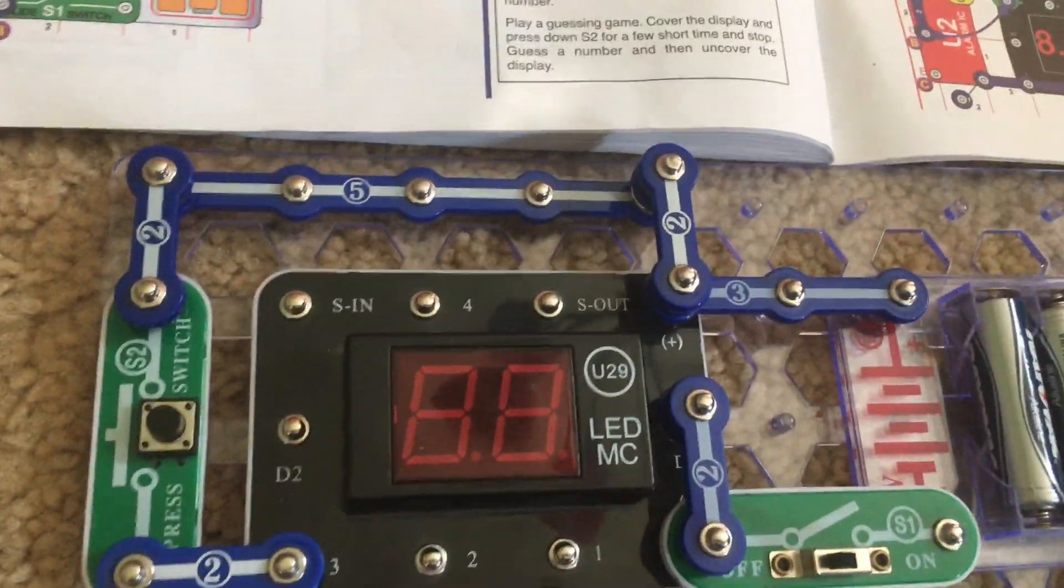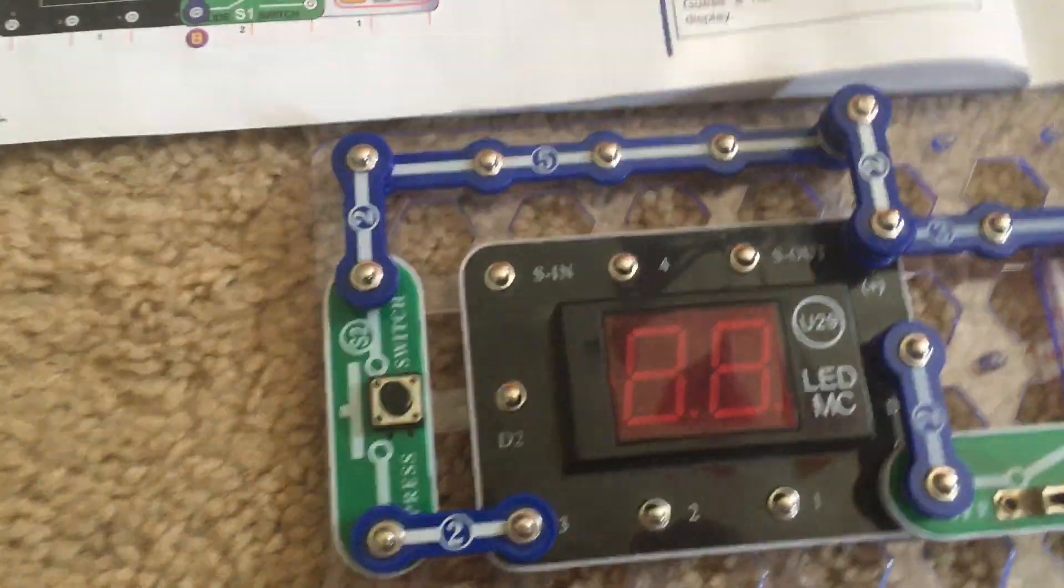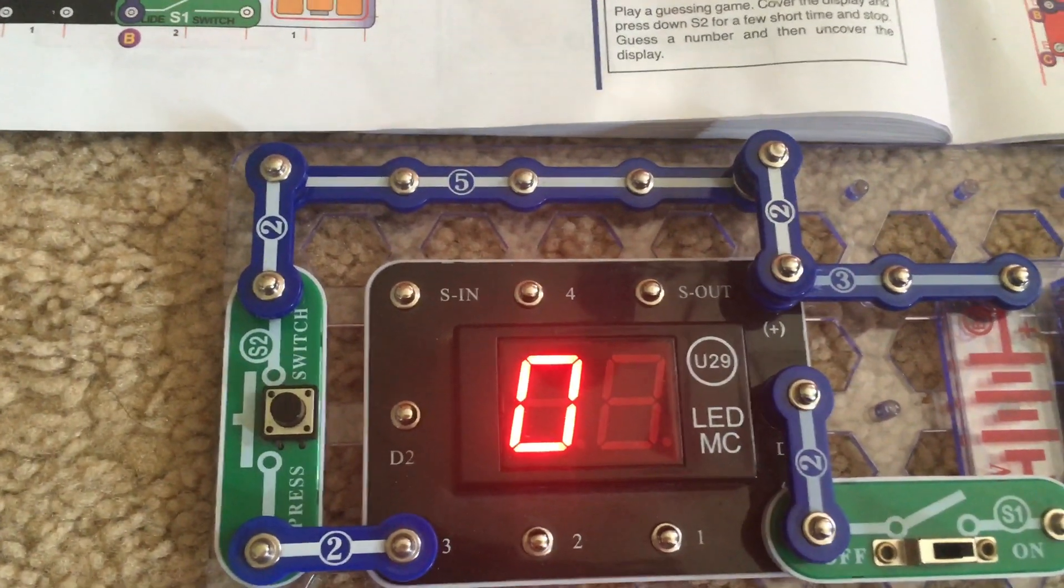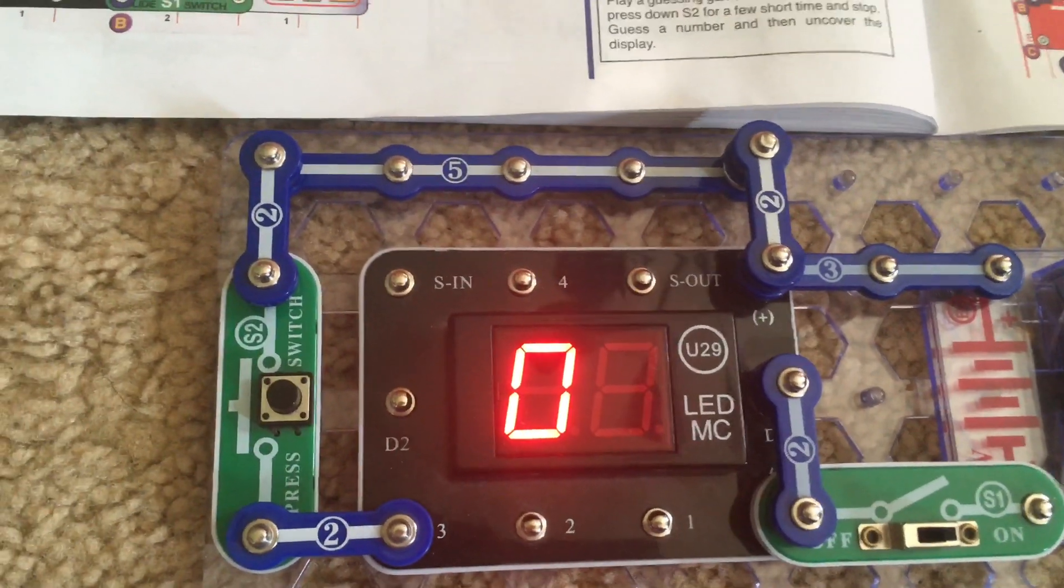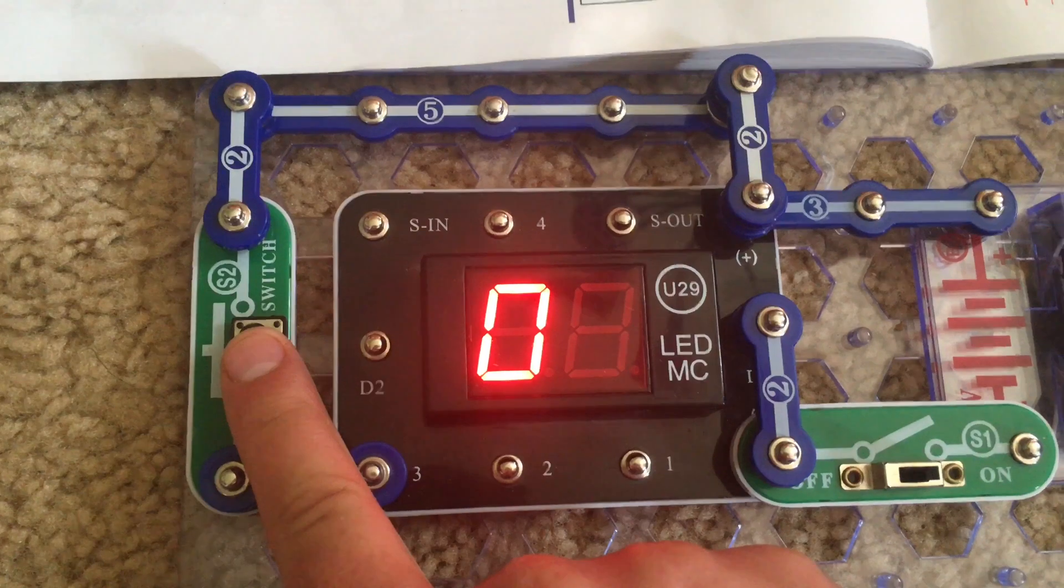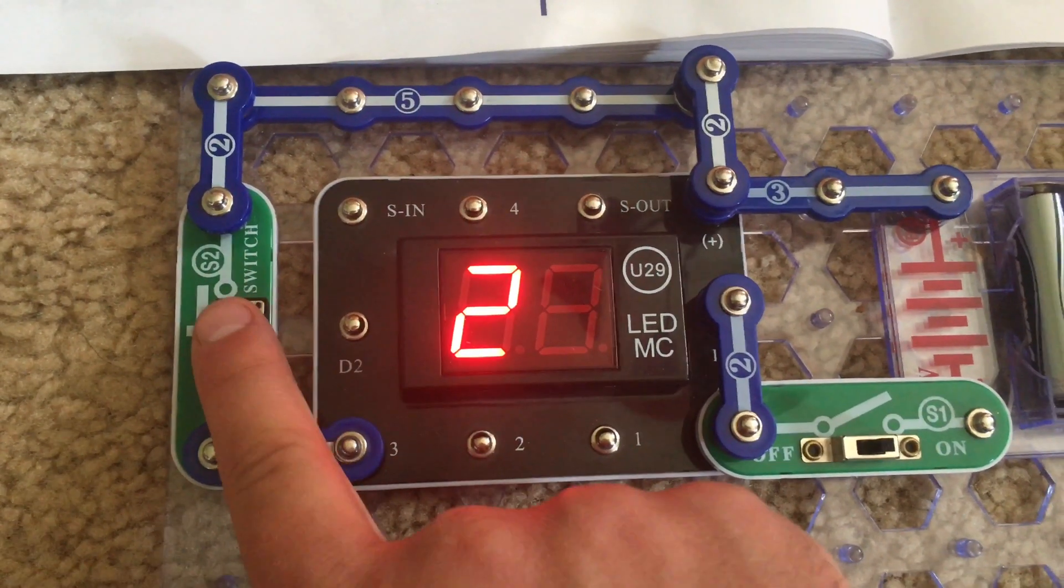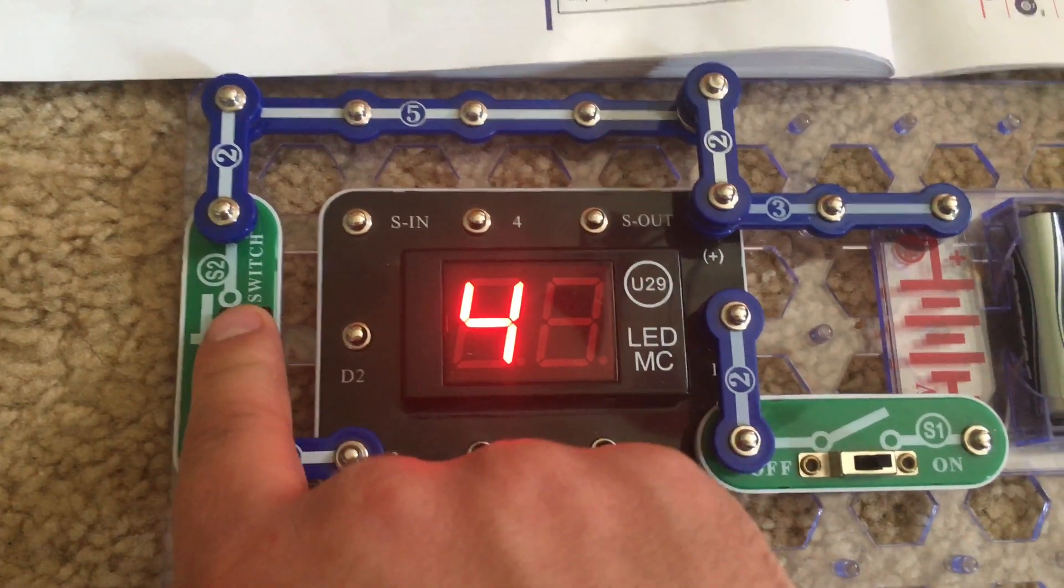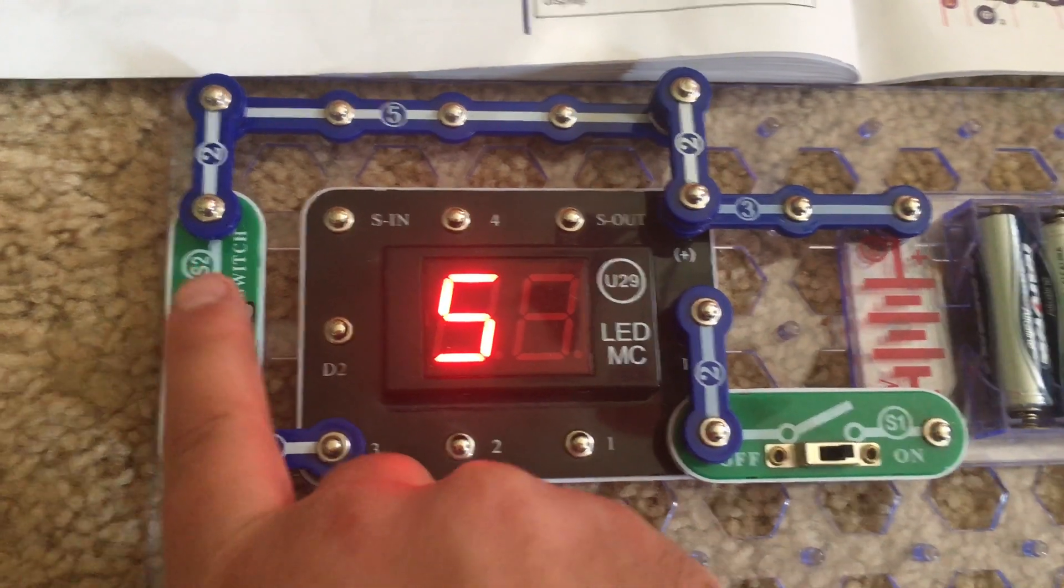Project 194 is add one. For this project we are going to turn on the slide switch and the tens digit of the U29 display will show zero. Now we have to hit the press switch and now the number turns to one. Press it again, it turns to two. So basically we are increasing the number by one for each time that we hit the press switch.